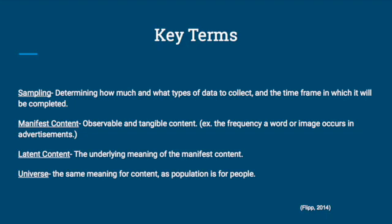Sampling is a task that needs to be done by the research team before the data is collected. Sampling is the act of determining how much and what types of data to collect and the time frame in which it needs to be collected. The first type of content that can be analyzed is manifest content, which is observable, tangible content — you are able to see, hear, or watch this type of content.